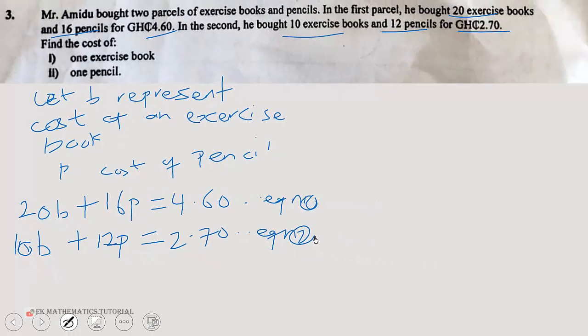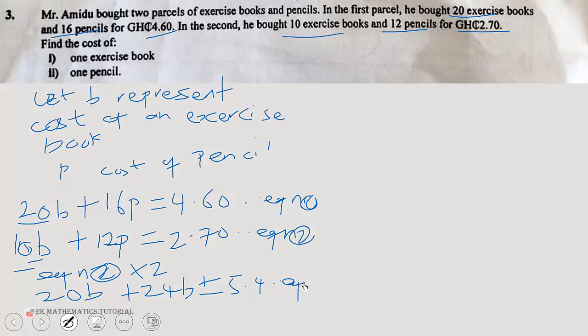So we are going to solve the two equations simultaneously. We can multiply equation two by two so that this and this will be the same. Equation two times two, we multiply each term. So that will give us 20B plus 24P equals 5.40 cedis. So we call this equation three.